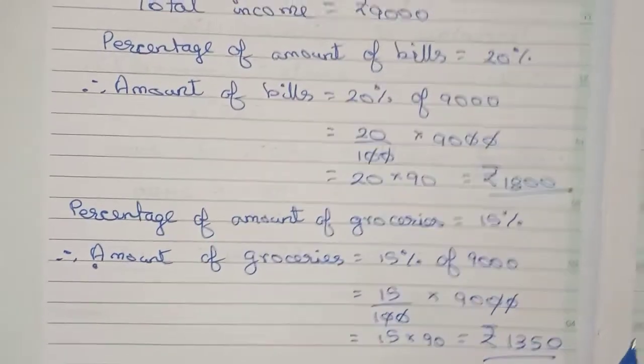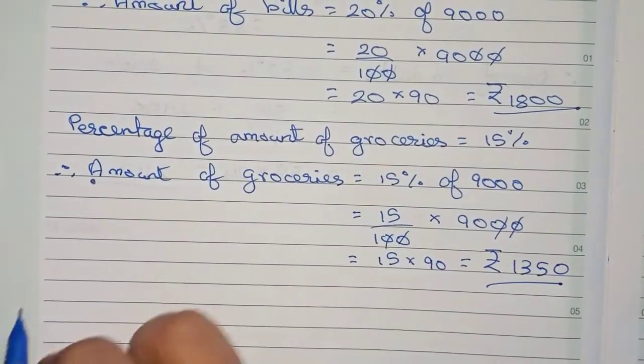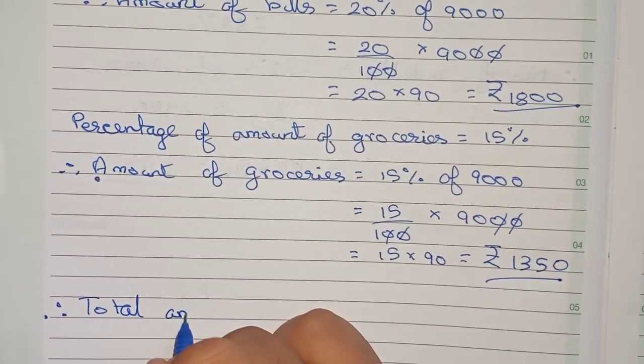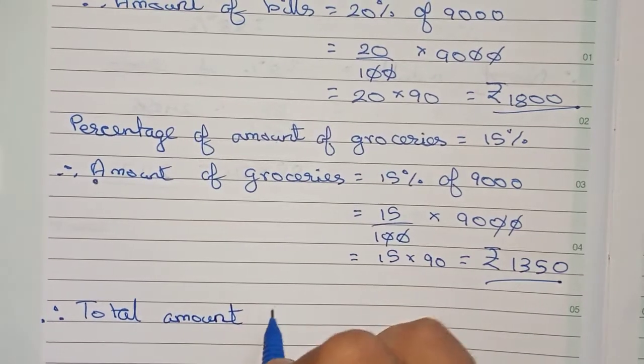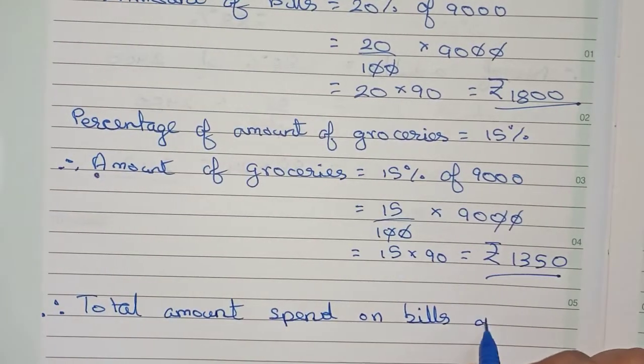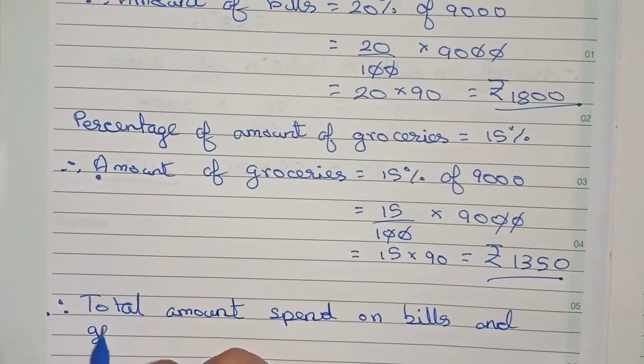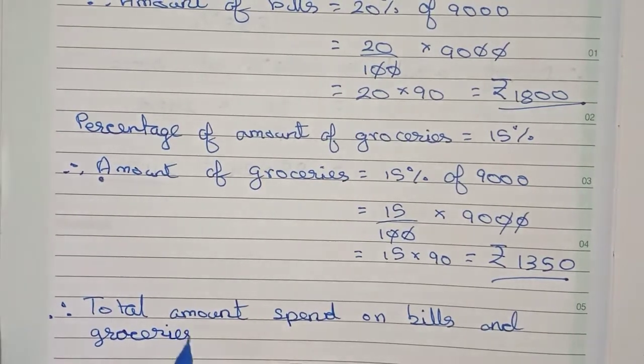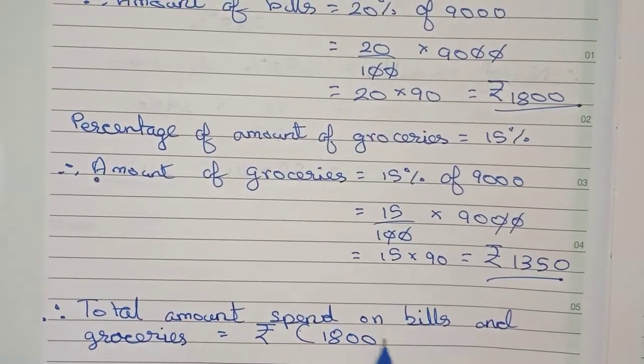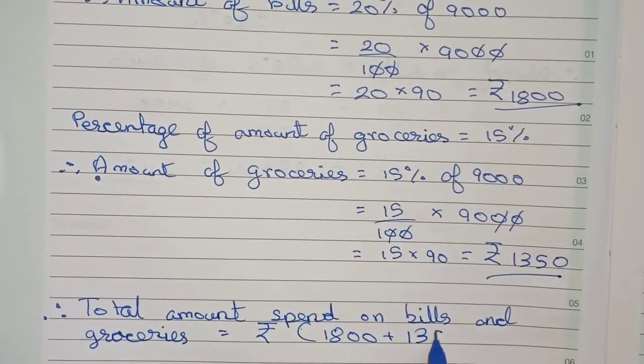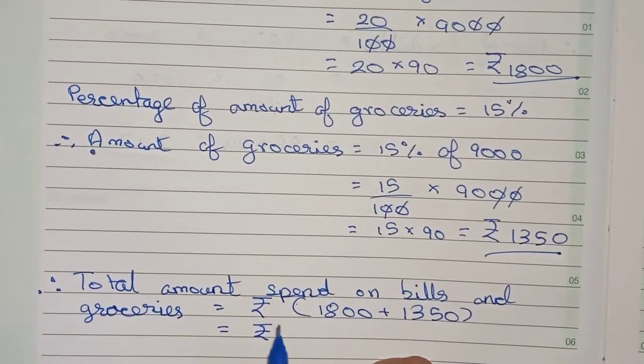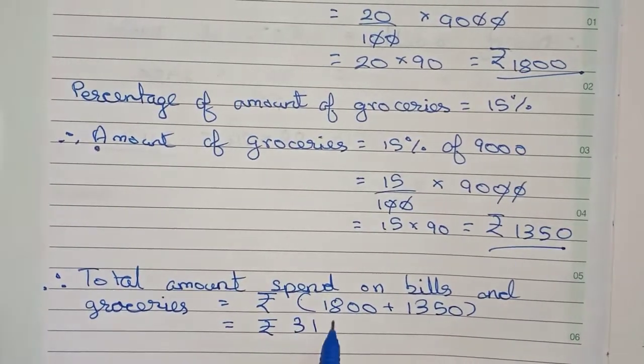Now the amount spent on groceries. So now write, therefore the total amount spent on bills and groceries is equal to, so now that will be equal to rupees 1,800 plus 1,350.